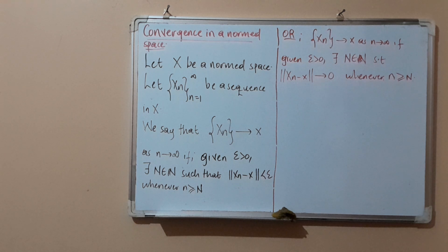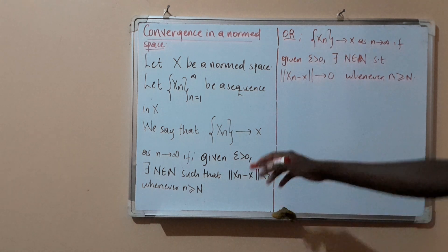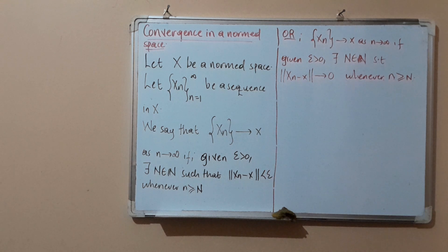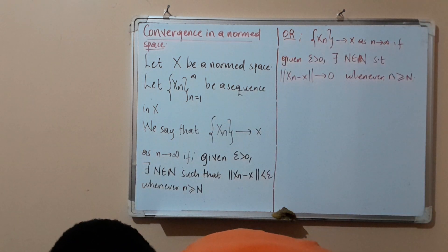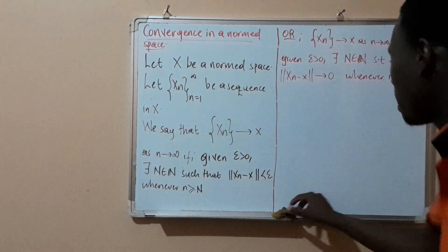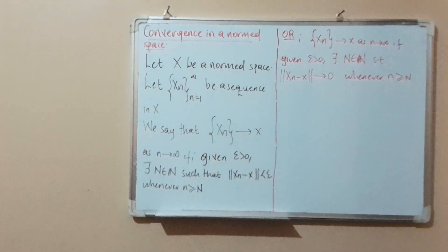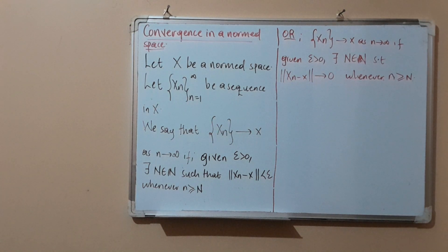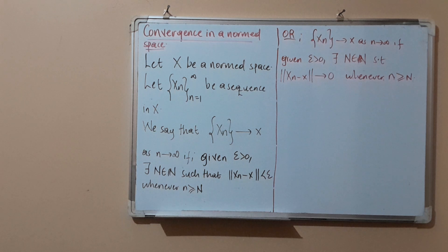So a sequence is convergent in a normed space if this definition is satisfied. We can modify this definition accordingly. Now we are going to prove some of the important properties of convergence in a normed space. The first property deals with continuity in a normed space — specifically, continuity of the norm.